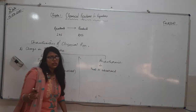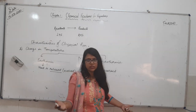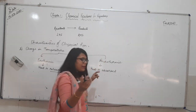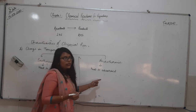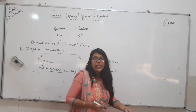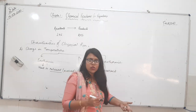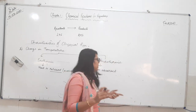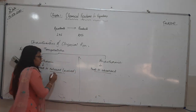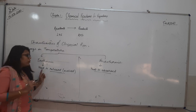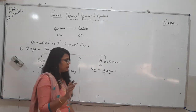Absorption of heat — endothermic — is like when I am doing a reaction and the beaker gets chill. That means it is absorbing all the heat; that is why it is becoming chill. Or, if I am giving heat to the reaction mixture, that is also heat being absorbed. So endothermic and exothermic have only one difference: when heat is evolved, that is exothermic; when heat is absorbed, that is endothermic.